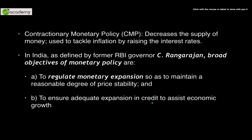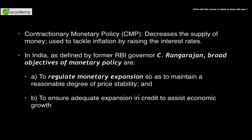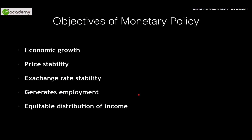In India, C. Rangarajan, the ex-RBI governor, has stated two objectives of monetary policy. The first objective is to regulate the monetary expansion — what we were calling money supply in the economy. The second is to ensure adequate expansion in credit to assist economic growth. Broadly speaking, the objectives of monetary policy are: firstly, economic growth; second, price stability, which means keeping prices of goods and services in check by maintaining adequate money supply.